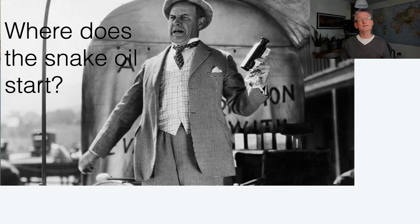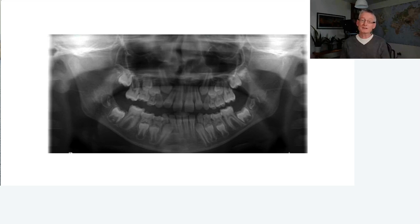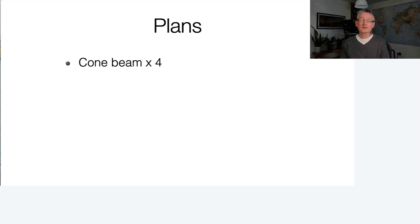While we can take a holier-than-thou attitude toward key opinion leaders and the fringe, we do have to consider another side of the story: where does the snake oil start? This is an example from social media showing a child in the transitional dentition where the upper permanent canines appear potentially impacting on the radiograph. Someone posted this asking for opinions and treatment plans. Several respondents went straight for cone beam CT, which isn't really warranted unless you are not 100% certain of canine position; others went for extraction and observation, probably the most sensible treatment with some evidence base.